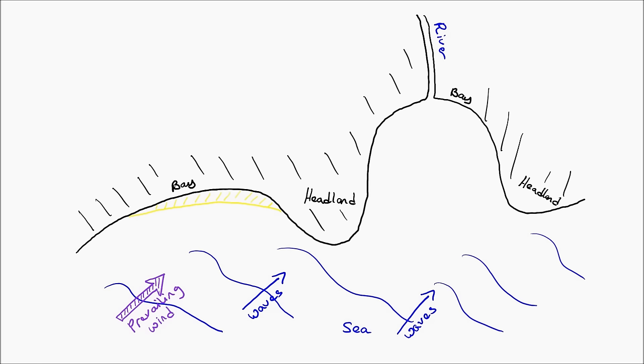This sediment that is slowly transported across the coast will eventually become deposited on the far side of the headland. This part is more sheltered and less affected by the waves and the wind, so therefore deposition occurs.